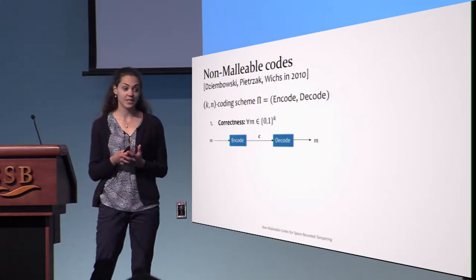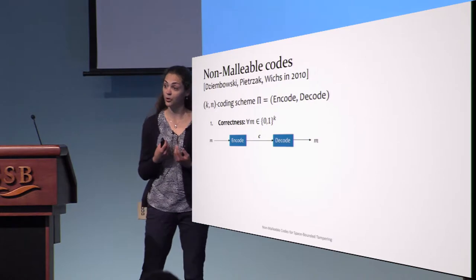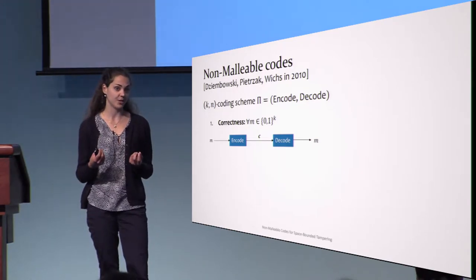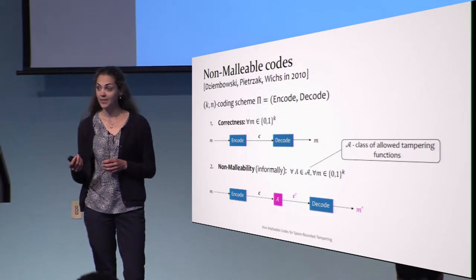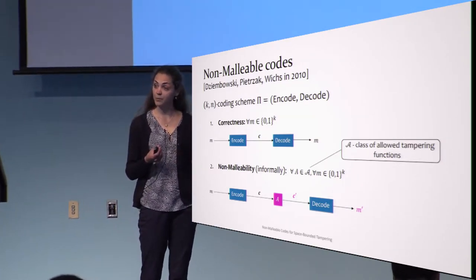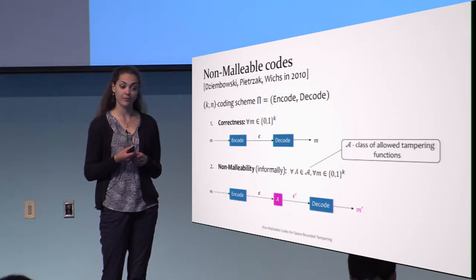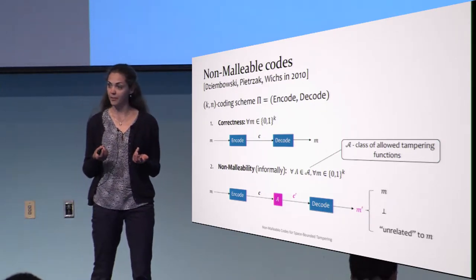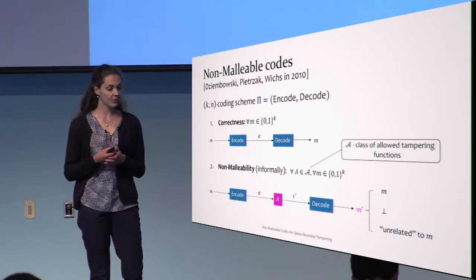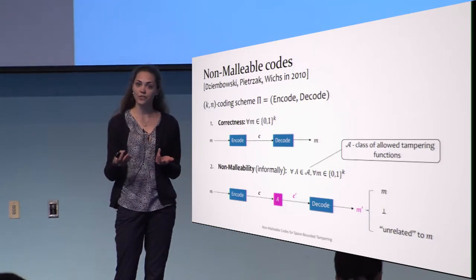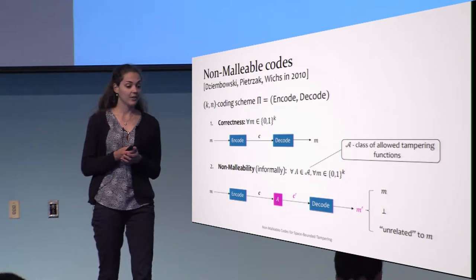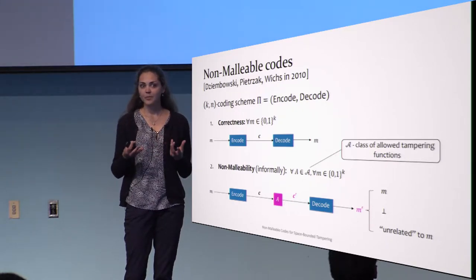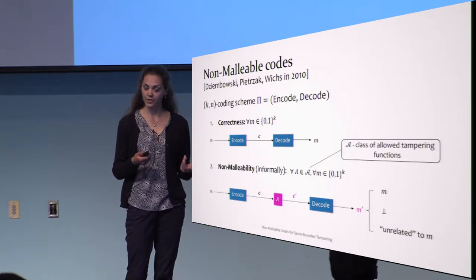A non-malleable code is a coding scheme. We require correctness: if we encode a message and then run decode, we get the original message. The second property is non-malleability. Informally, if we encode message M and apply a tampering algorithm A to the codeword, we get some tampered codeword C'. There are three options: it decodes to the original message M, it's an invalid codeword yielding a failure message, or it decodes to some M' which is unrelated to M — meaning it doesn't reveal any information about the original message.